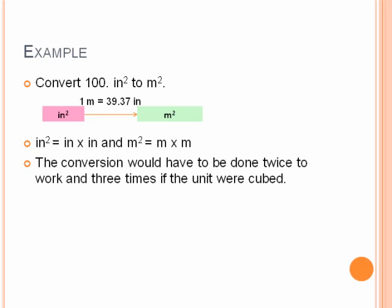So we start by realizing that inches squared is inches multiplied by inches, and meters squared is meters times meters. So the conversion would have to be done twice to work, and if it were cubed like a volume, you would have to cube the conversion factor as well.